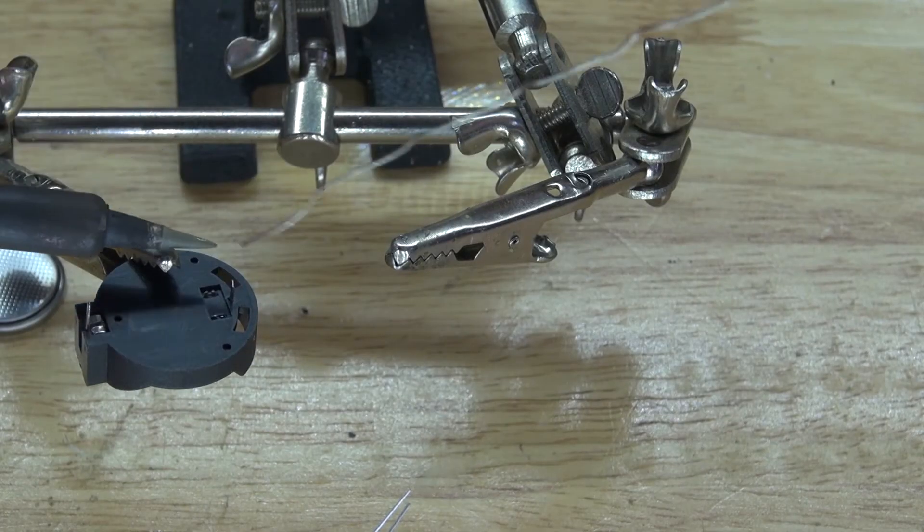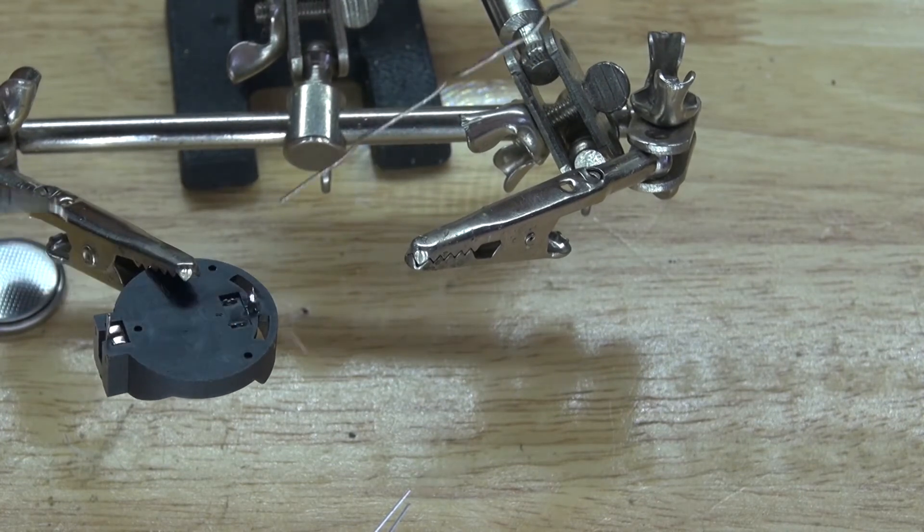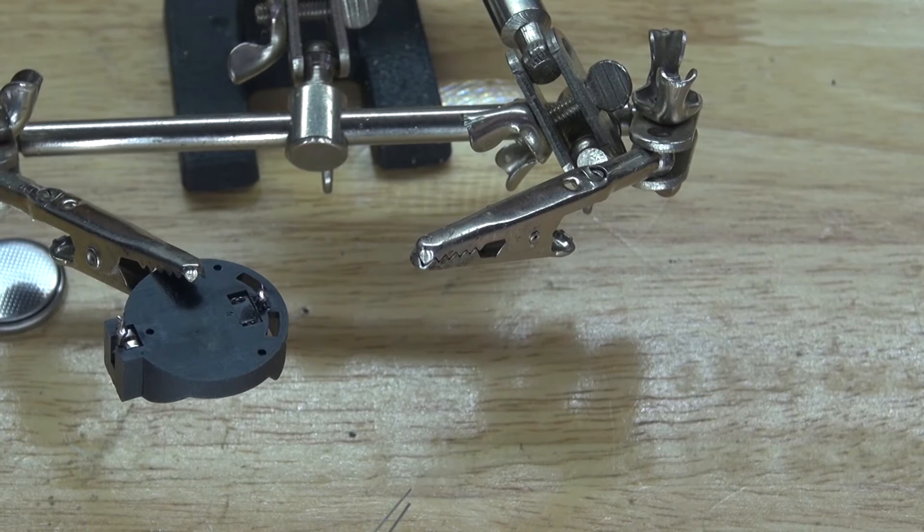First what I want to do is I want to go and solder tin the leads of this button cell battery holder. There we go, just like that.